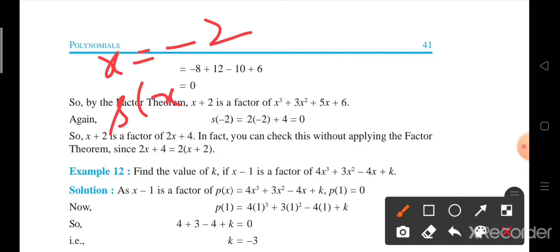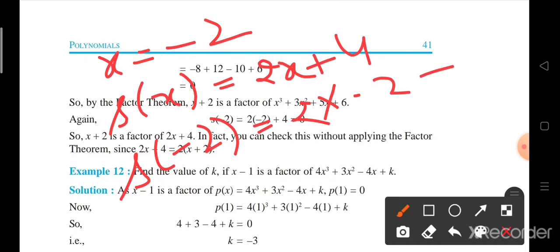The polynomial s(x) is 2x plus 4. Now, instead of x place minus 2. What you get? 2 into minus 2 plus 4, which equals minus 4 plus 4. Again coming to 0. That means x plus 2 is also the factor of 2x plus 4.